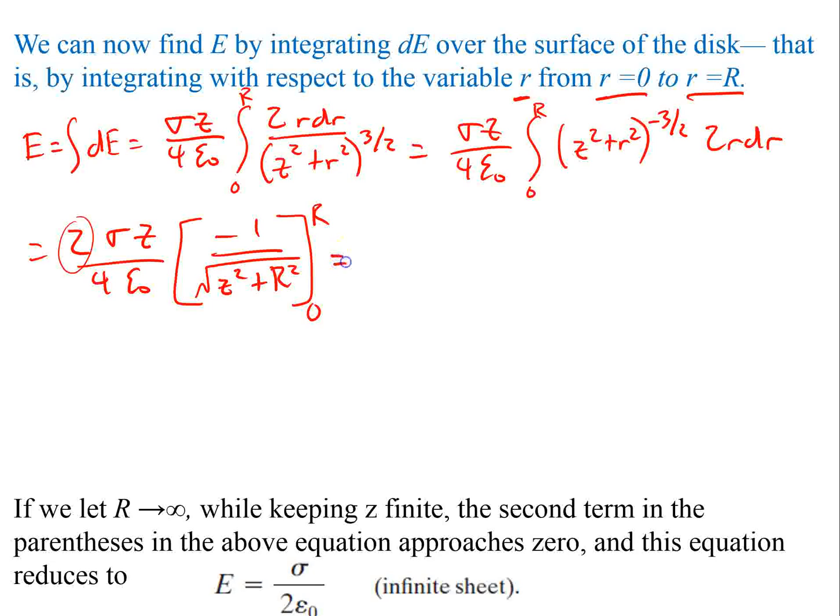So moving on to the next step, simplify this. We have 2 sigma divided by 4 epsilon naught. I'm going to go ahead and put the z inside. So when I do that, I first want to take this value. This is still little r. So I want to take the r value first. So we plug in big R for little r, and that's going to end up being negative because you have a negative sign there. So you get negative z divided by z squared plus R squared.